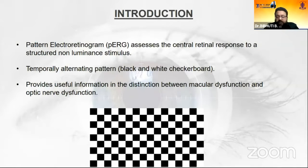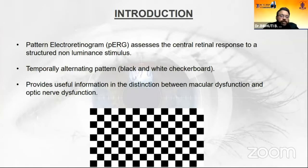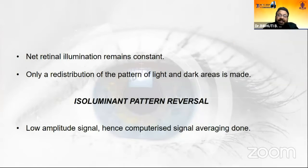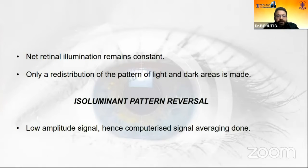This brings us to the topic of pattern ERG. Pattern ERG assesses the central retinal response to a structured, non-luminous stimulus — a temporally alternating pattern, usually a black and white checkerboard. It is used to distinguish macular dysfunction from optic nerve dysfunction, which a VEP alone is not able to do. The net retinal illumination remains constant; there is only a redistribution of the pattern of light and dark areas — it is an isoluminant pattern reversal.